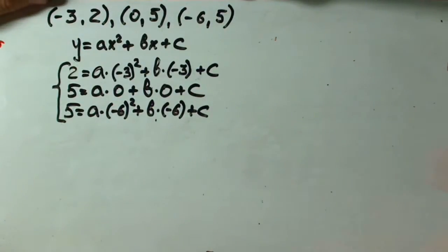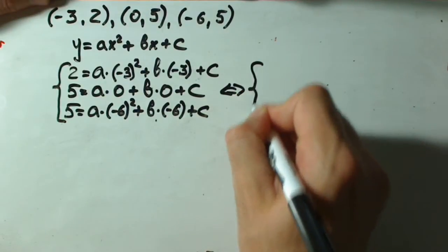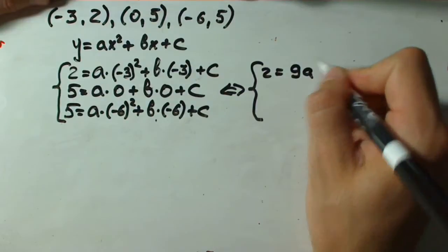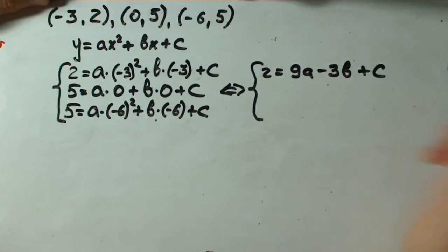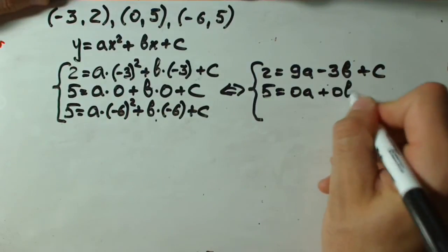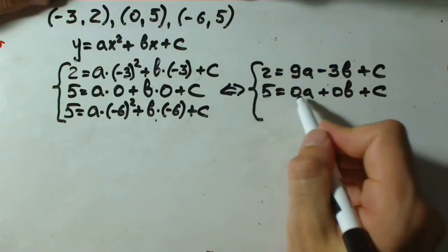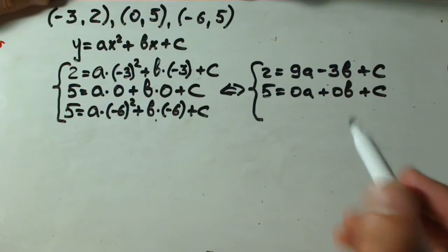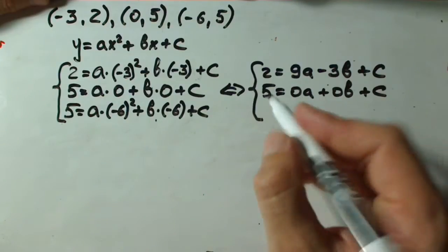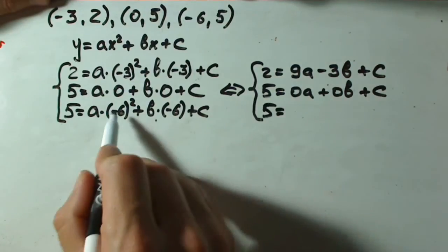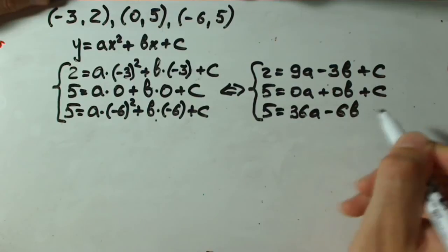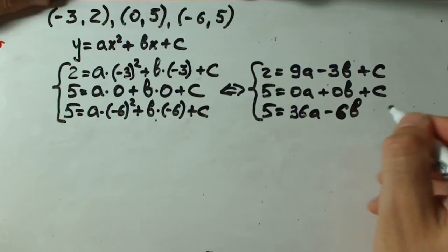Now let's try to simplify it. We have 2 equals, negative 3 squared is just 9a, b times negative 3 is just negative 3b plus c. Next one is 5 equals 0a plus 0b plus c. I'm leaving this 0 here because I'm going to use matrix system, and in this case it's kind of good to see our coefficients to each variable. And next one is 5, negative 6 squared is just 36a, negative 6 times b, negative 6b, plus c.